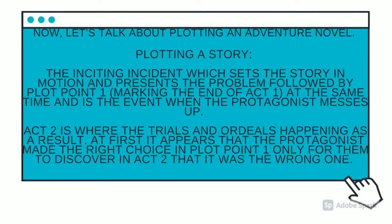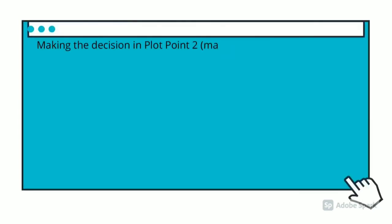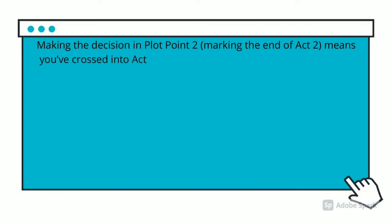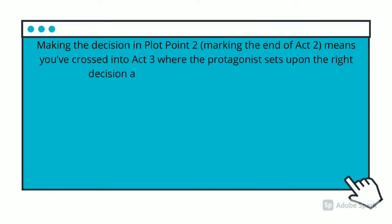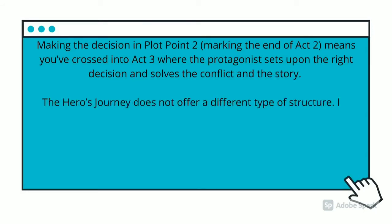Now let's talk about plotting an adventure novel. A story has an inciting incident which sets the story in motion and presents a problem, followed by plot point 1 marking the end of act 1 — the event where the protagonist makes a key decision. Act 2 is where trials happen as a result, and the protagonist discovers that the decision made in act 1 was the wrong one.